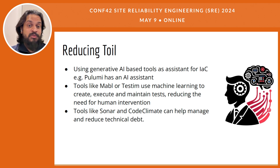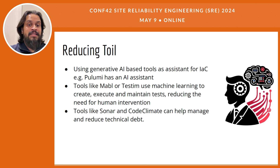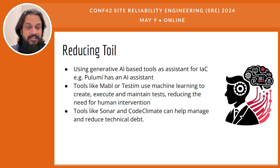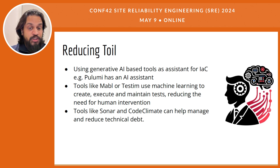Managing and reducing technical debt is a crucial part of maintaining the health and scalability of software. Tools like SonarQube and Code Climate provide automated code review services that help developers identify and fix quality issues contributing to technical debt, such as code smells and security vulnerabilities. By integrating these tools into the CI/CD pipeline, teams can ensure continuous code quality checks, which helps prevent the accumulation of technical debt over time. Moreover, these tools offer actionable insights and metrics that aid in decision-making regarding refactoring efforts, ultimately ensuring that the code base remains clean, efficient, and maintainable.